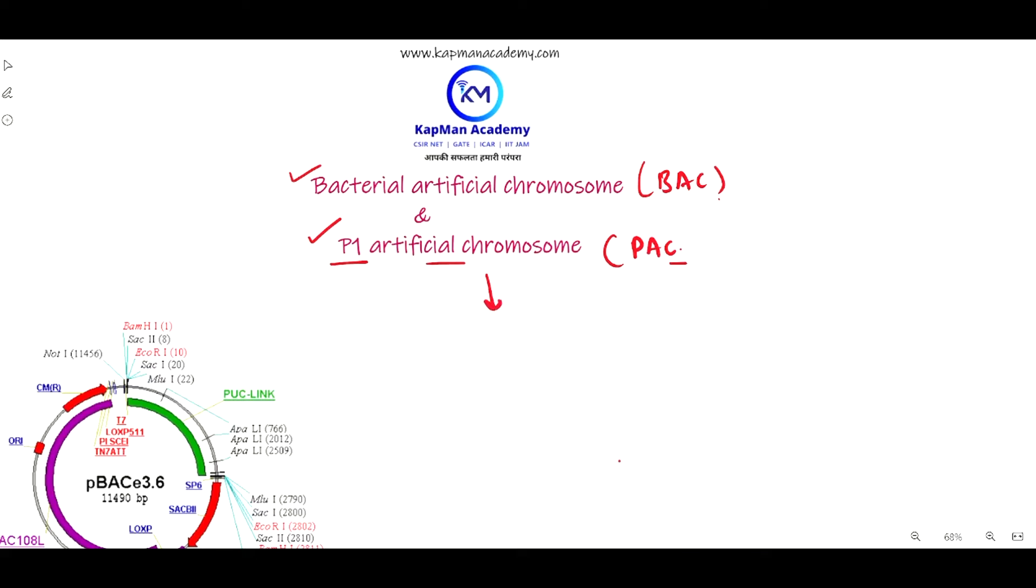Both of these cloning vectors have the ability to accommodate larger inserts, similar to yeast artificial chromosome, in comparison to lambda phage, cosmids, and phasmids.